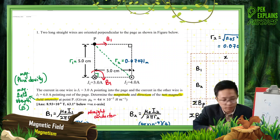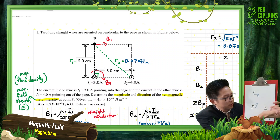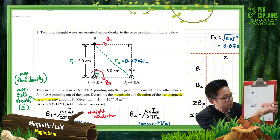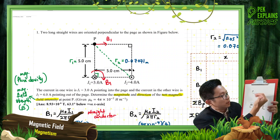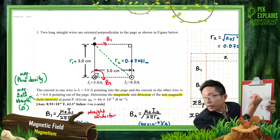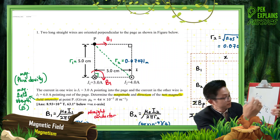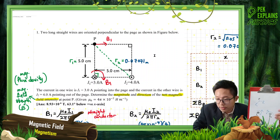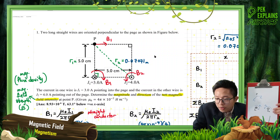For current I2 going out of the page, the magnetic field is anti-clockwise. At point P, the magnetic field B2 is going to the left and downward. This B2 is produced by I2.